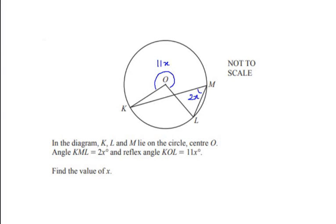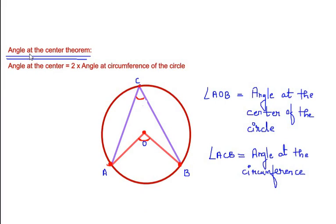To start with, let us try to find out the angle KOL. We have to use a circle theorem here, which is the angle at the center theorem. It says that the angle at the center is two times the angle at the circumference of the circle. In the diagram, points A and B make an angle at center O, and the same two points make an angle at the circumference at point C.